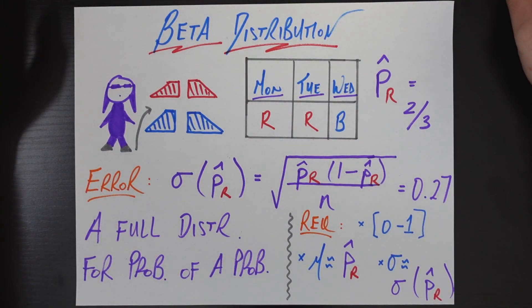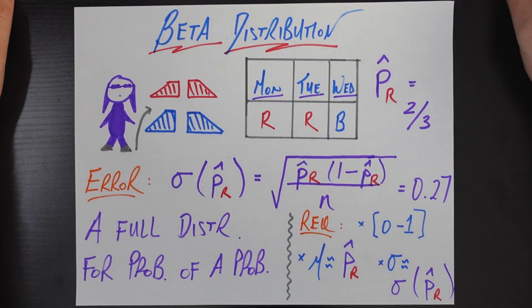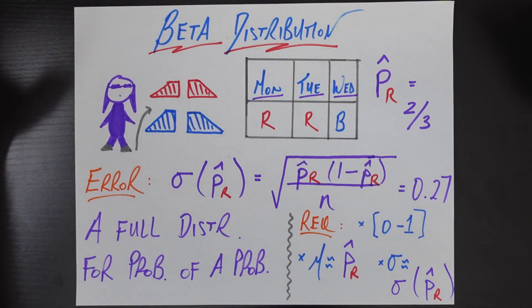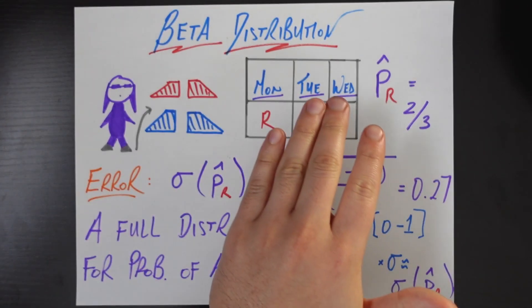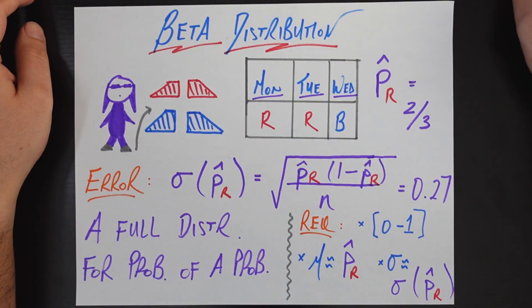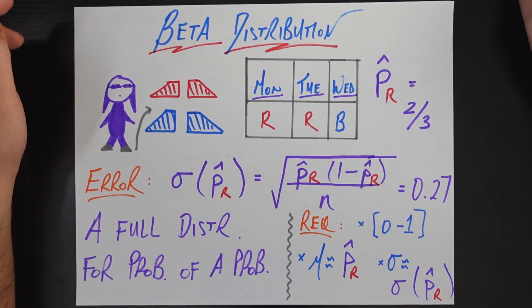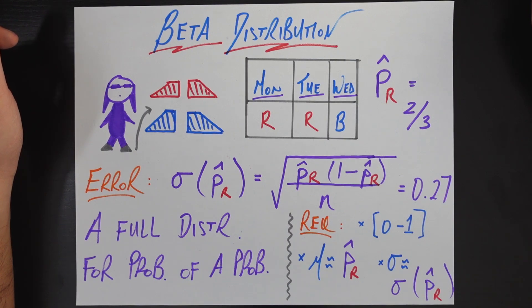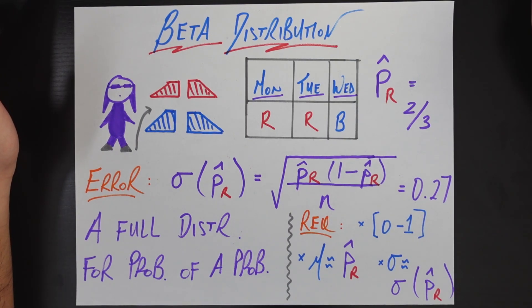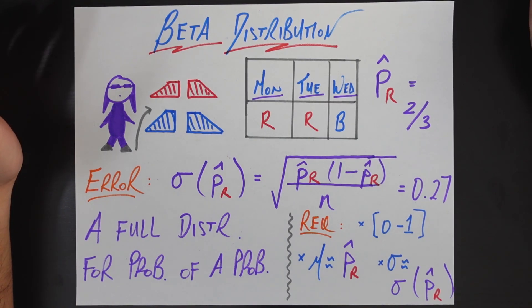What is up friends? So today we're going to be talking about one of my favorite distributions in all of statistics and data science, the beta distribution. I didn't learn about this distribution until kind of later in my journey through data science and machine learning, but once I did learn about it and I learned about the main application of the beta distribution, it quickly became one of my probably top three distributions in all of data science.